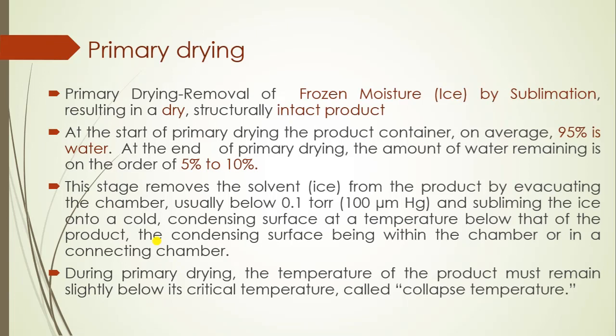Primary drying — the primary drying step consists of removal of frozen moisture, that is ice, by sublimation, which results in a dry and structurally intact product. When we start primary drying, the product mainly consists of around 95 percent moisture, and at the end of primary drying the amount of moisture reduces to 5 to 10 percent.